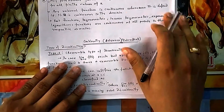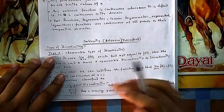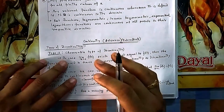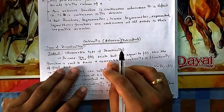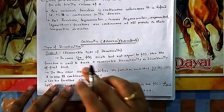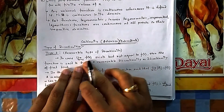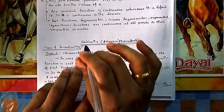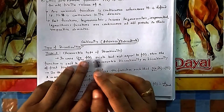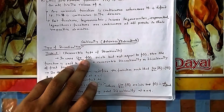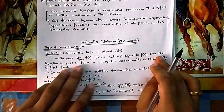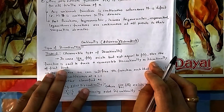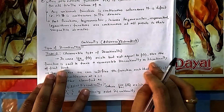We will be discussing different types of discontinuity. There are generally two types: Type 1 and Type 2. In Type 1, let's first see the definition — the limit exists at the point of consideration c, but it is not equal to the value of the function f(c). Then the function is said to have removable discontinuity, or discontinuity of the first kind.